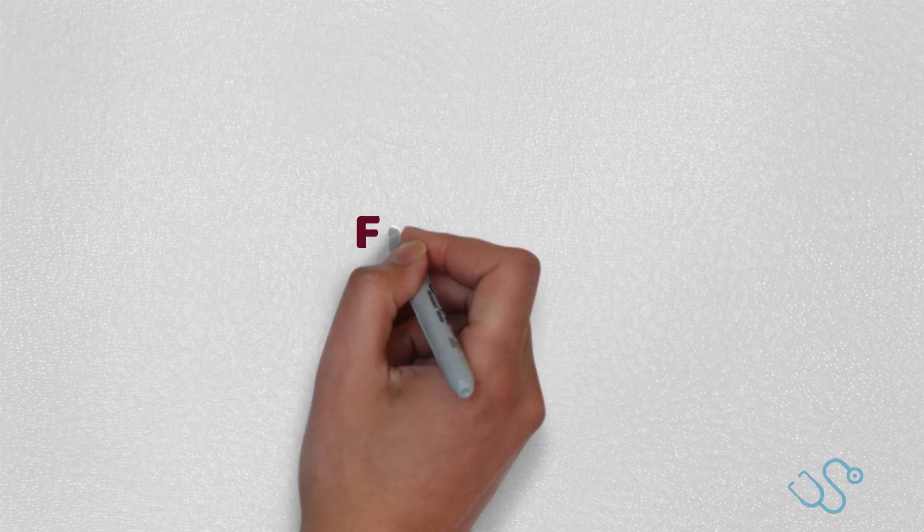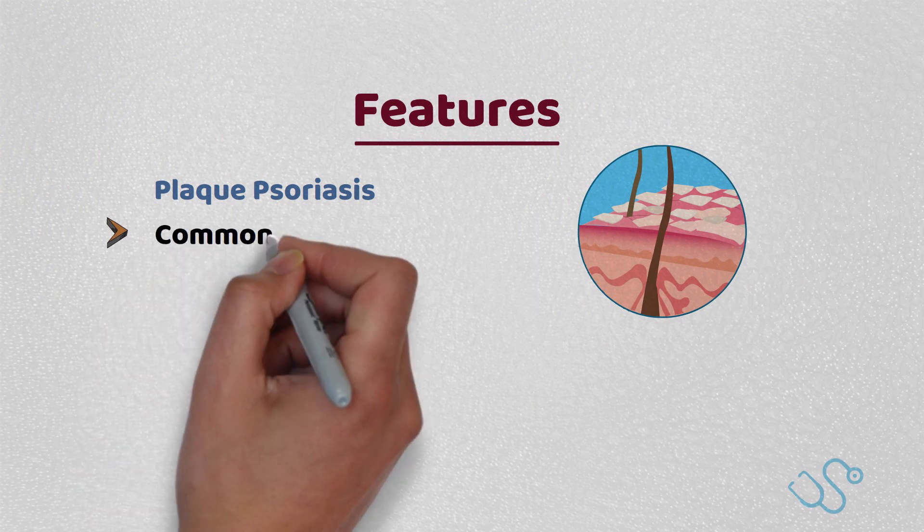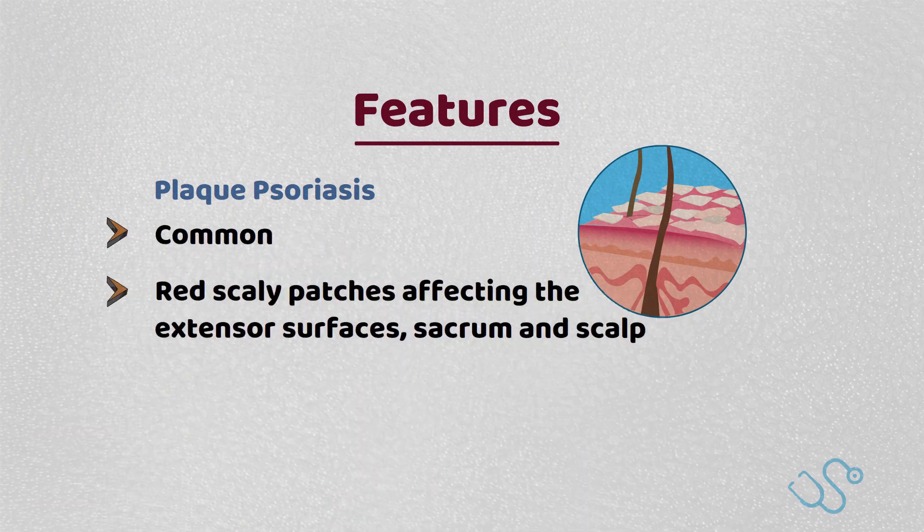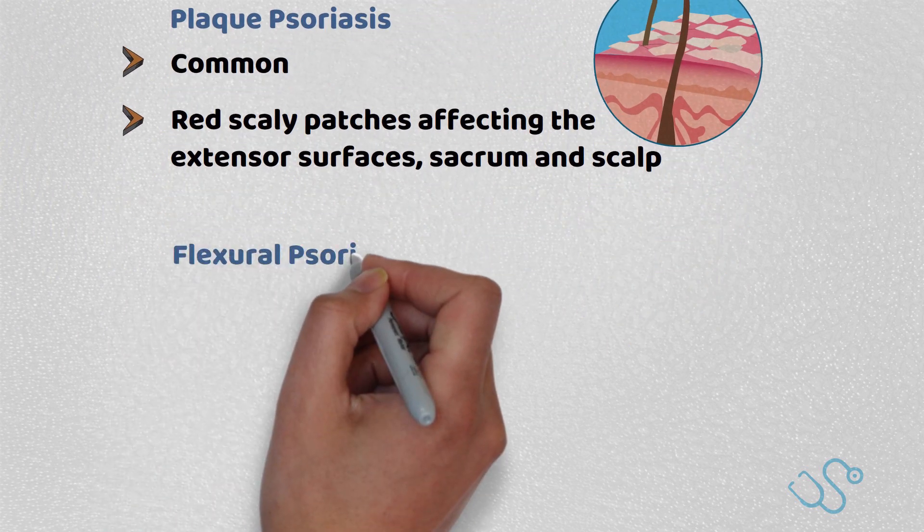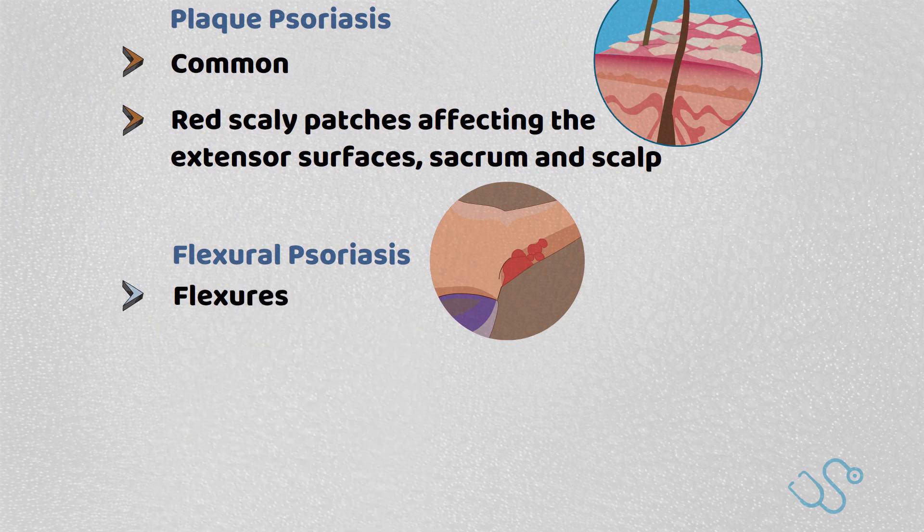When it comes to features, we often categorize psoriasis. Plaque psoriasis is the most common, usually with red scaly patches affecting the extensor surfaces, sacrum, and scalp. Flexural psoriasis, as the name says, happens in flexures, but the skin is smooth and non-scaly.